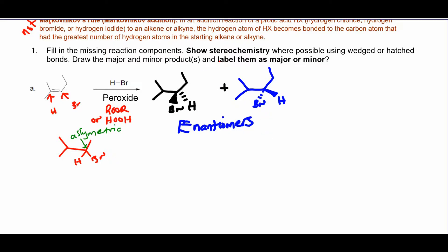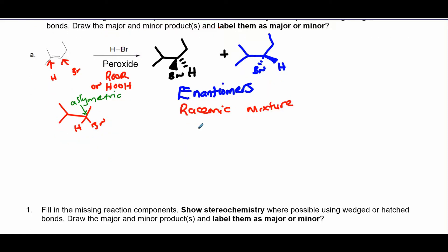And again, that gives you a racemic mixture—equal amounts or equal chance—so a one-to-one mixture of those two products. None of them is major, none of them is minor.